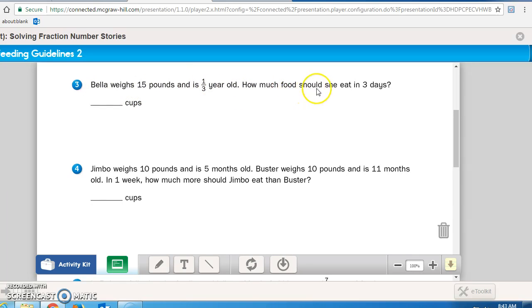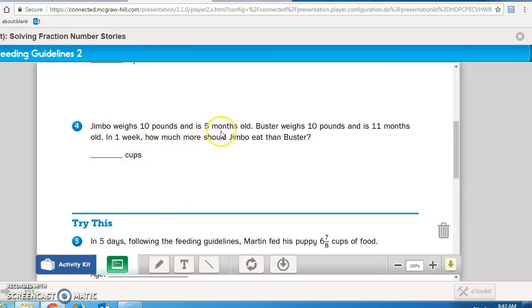Once you finish 2, go ahead and do 3. It says Bella weighs 15 pounds and is 1/3 of a year old. How much food should she eat in 3 days? So you're gonna have to figure out 1/3 of a year is how many months, and then complete this problem.